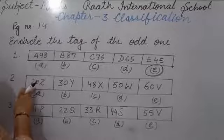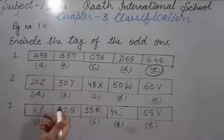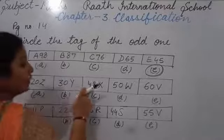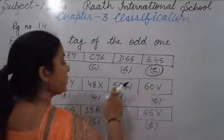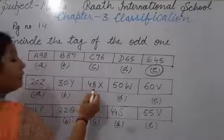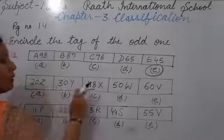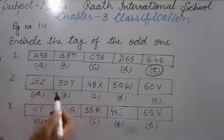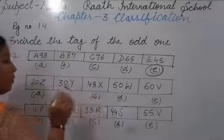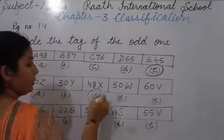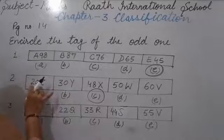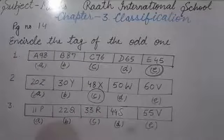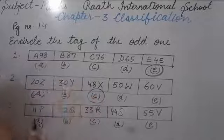Second question: 20Z, 30Y, 48X, 50W, 60V. Firstly numbers are given, so we check numbers: 20, 30, 40, 50, 60 — these should be correct with tens increasing by 10. But here there is given 48 instead of 40. So 48X is different and wrong — here will come 40. Alphabets are also correct: Z, Y, X, W, V — from back side these are correct. So only the number 48 is wrong. We circle it.